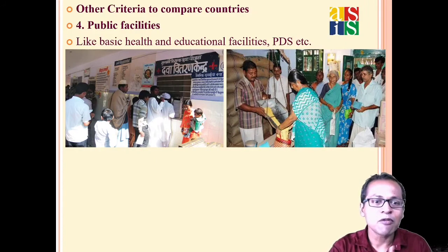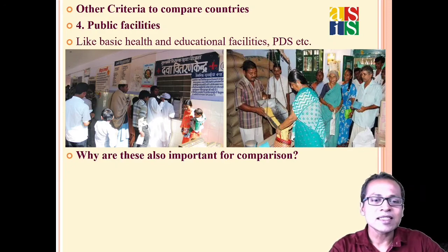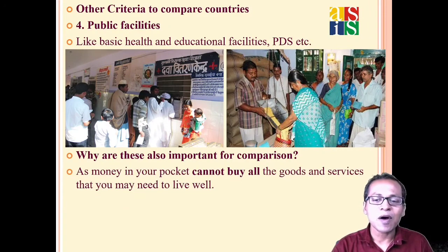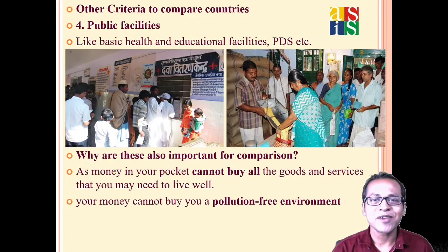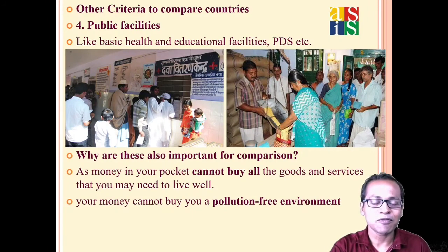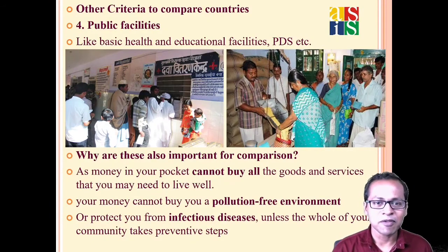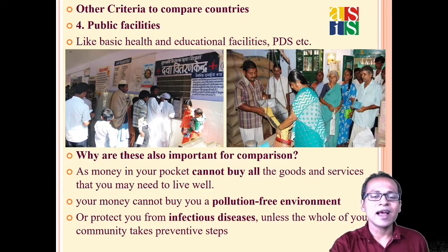Why are criteria other than per capita income also important? Because money cannot buy all the goods and services needed to live well. For example, in Delhi it is very important to get clean air to breathe. In Corona time we understood the value of clean air like never before. Money also cannot protect you from infectious diseases like Corona — if your immunity is not good, you may not survive. Hence we need to give importance to criteria beyond money.